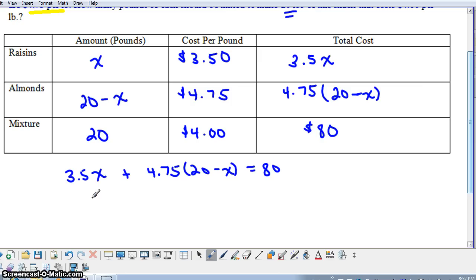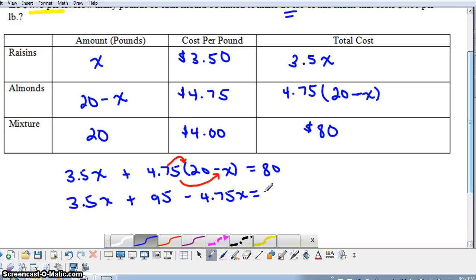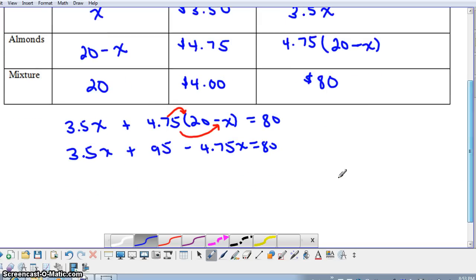Once we've set up the equation, it shouldn't be too difficult to solve. This is like stuff we've done earlier in the year. The first thing we're going to do here is distribute the 4.75 to both the 20 and the minus X. So when we do that, we have 95. Be careful with the negative sign here of minus 4.75X equals 80. Then we're going to combine like terms on the left-hand side here. 3.5X minus 4.75X gives us negative 1.25X.